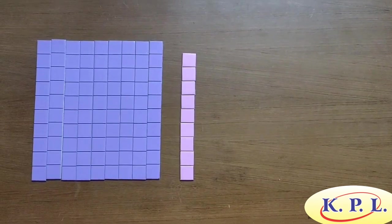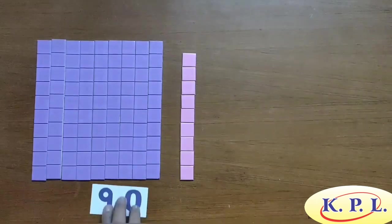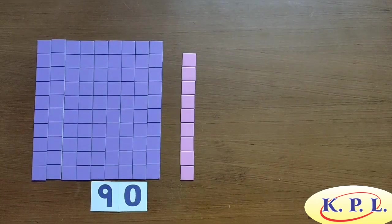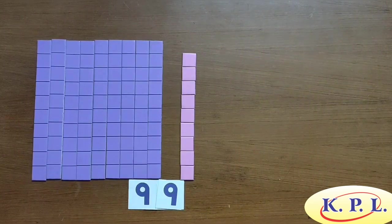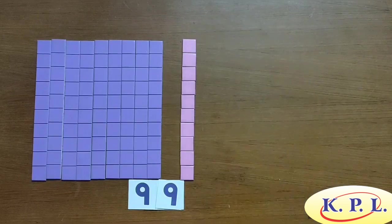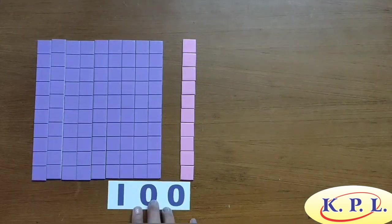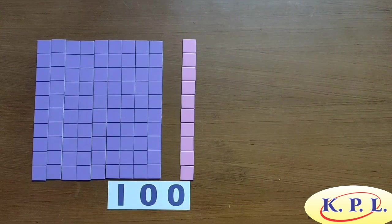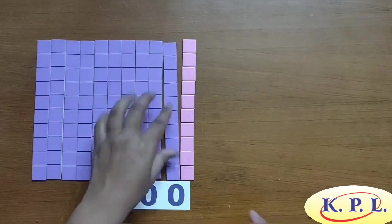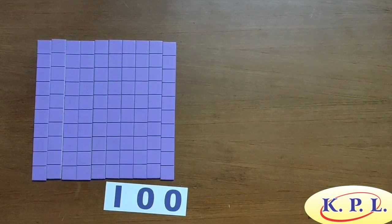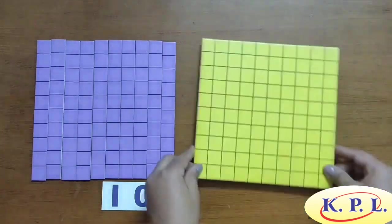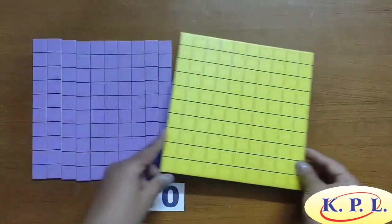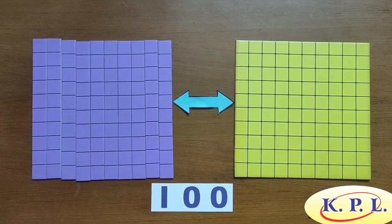Let us count these units and build the number. There are 9 strips of 10 units, i.e. 90 units, and 9 ones units, i.e. 9 units. 90 plus 9 is 99. Now, if I add one more ones unit, then what will we get? 99 plus 1 is 100 — yes, it becomes 100. These are 10 ones units, so we replace them with a strip of 10 units. Now there are 10 strips of 10 units, i.e. 100 units. Instead of using 10 strips of 10 units, we can use a board of 100 units. Both sides of the arrow equal the same amount; they just use different units to show the same number.